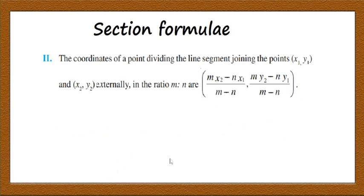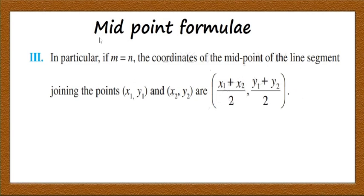Similarly, the coordinates of a point dividing the line segment joining (x₁, y₁) and (x₂, y₂) externally in ratio m:n are given by ((mx₂ − nx₁)/(m−n), (my₂ − ny₁)/(m−n)). In particular, when m = n, the midpoint formula gives the coordinates of the midpoint of the segment as ((x₁+x₂)/2, (y₁+y₂)/2).